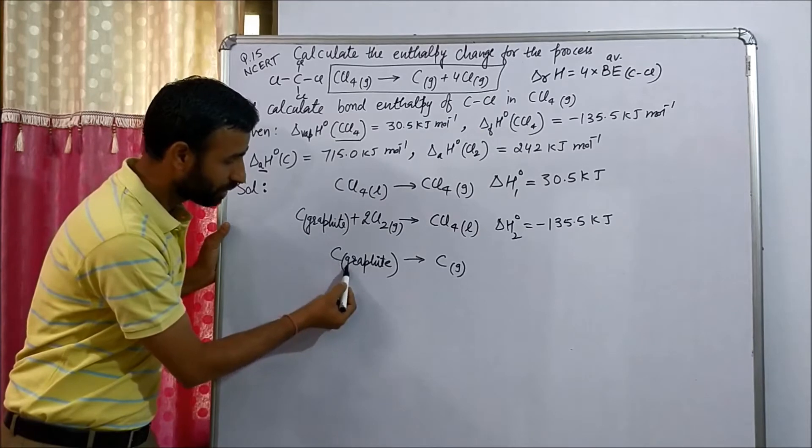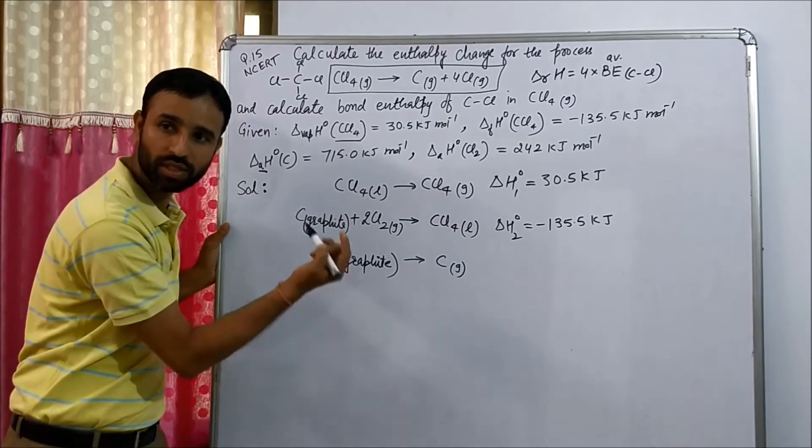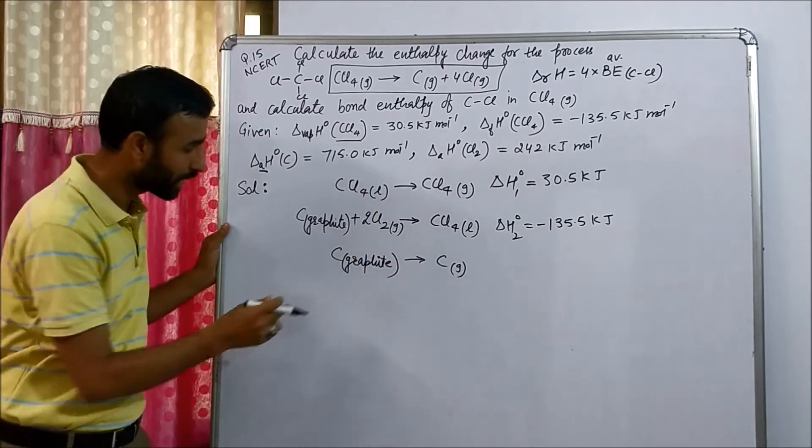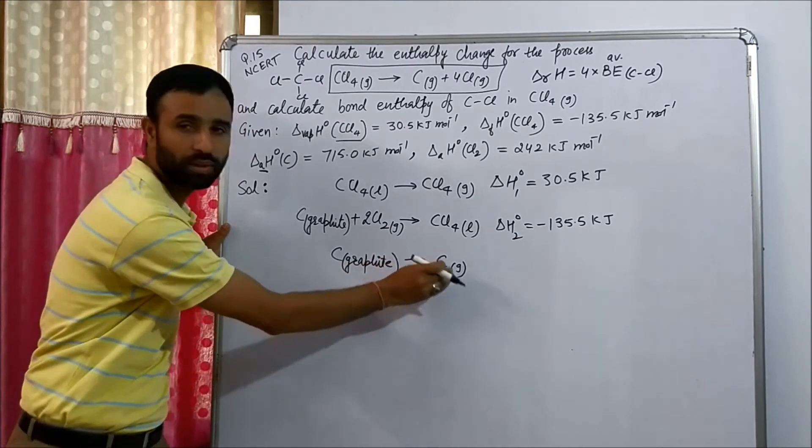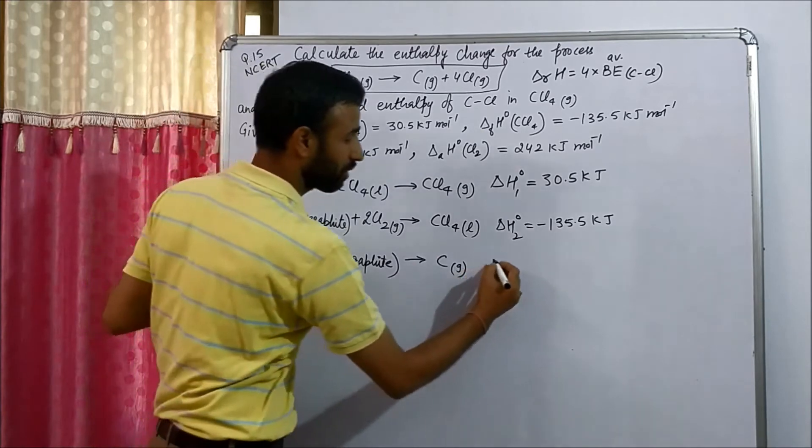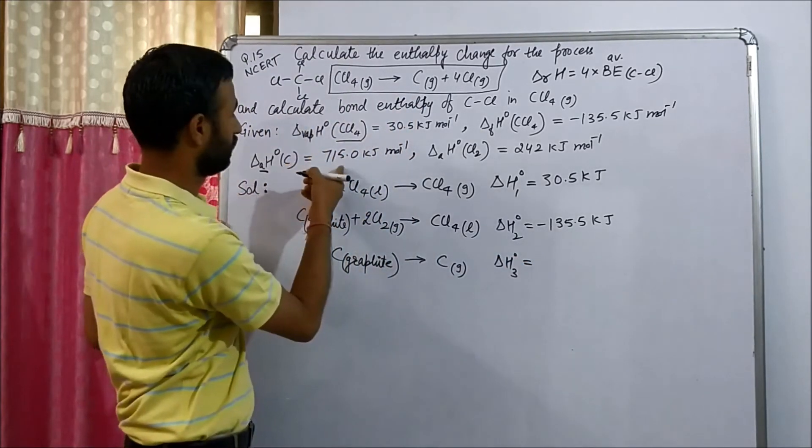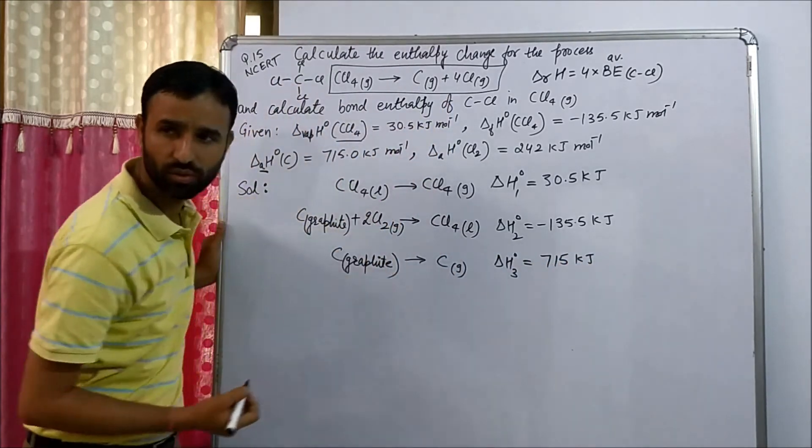So that implies we have to convert carbon solid in the form of graphite into carbon gas. Don't write carbon G here. Graphite, the first letter is G. If you write G that means it is gas. So write complete carbon in the form of graphite into carbon gas. That means gaseous carbon. And energy required is 715 kilojoules.